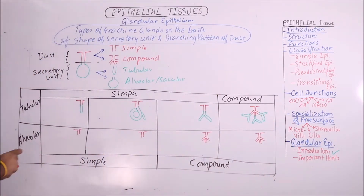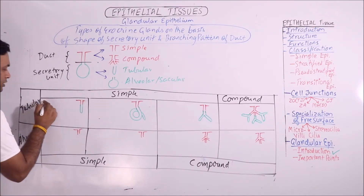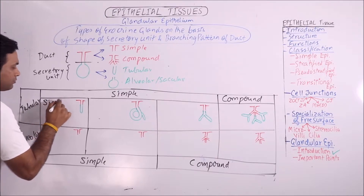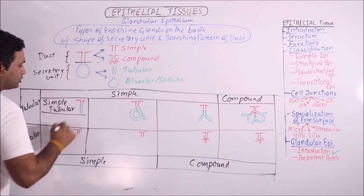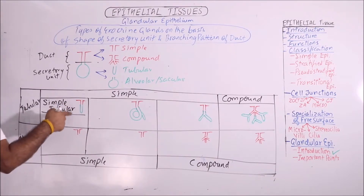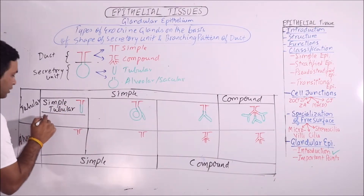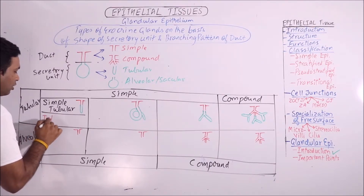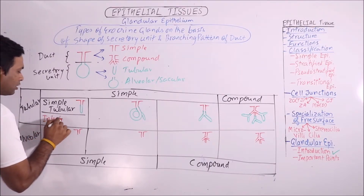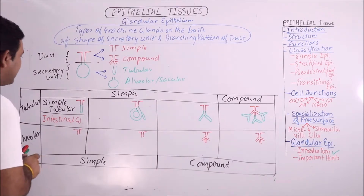Now what will be the terminology for all these glands? The first type will be termed as simple tubular, where the duct system is simple and the secretory unit is tubular. This type of gland is found in the crypts of Lieberkühn, or intestinal glands.